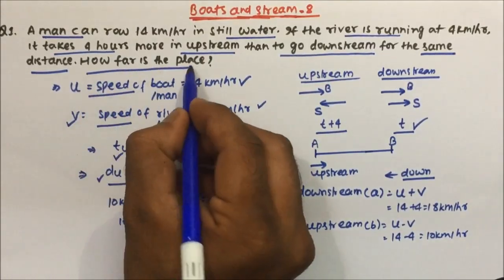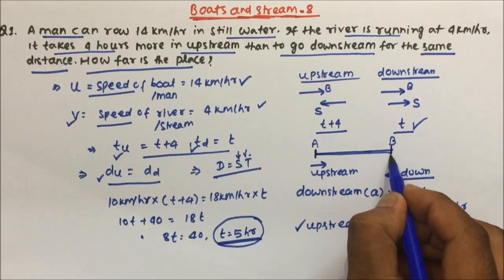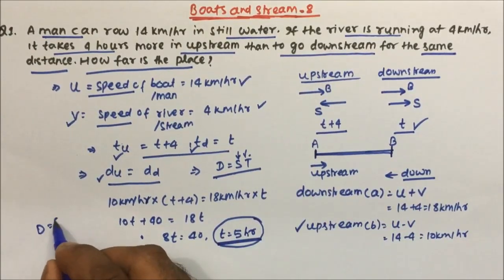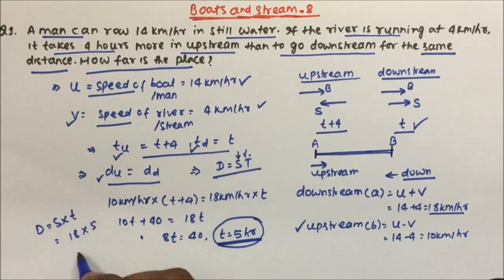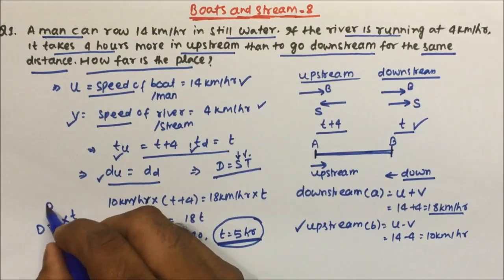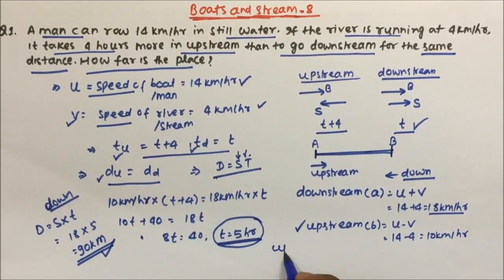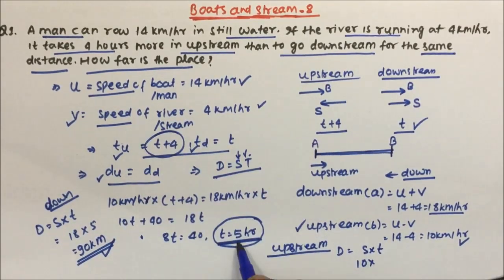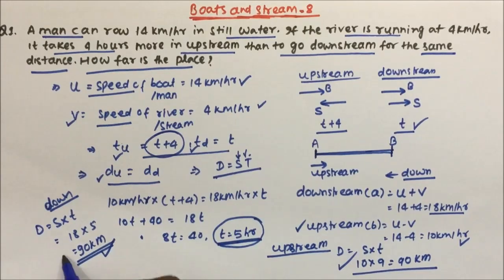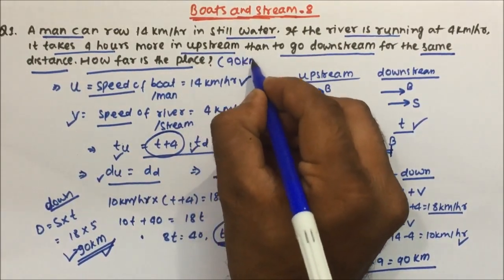Now they are asking how far is the place — they are asking for the distance. Distance equals speed into time. Downstream speed is 18 km/hr into time 5 hours = 90 kilometers. We can verify: upstream distance = upstream speed into upstream time = 10 into (5 + 4) = 10 into 9 = 90 kilometers. So the answer for this question is 90 kilometers.